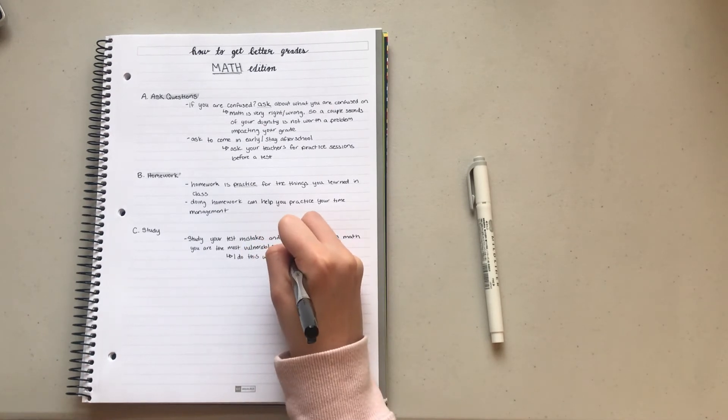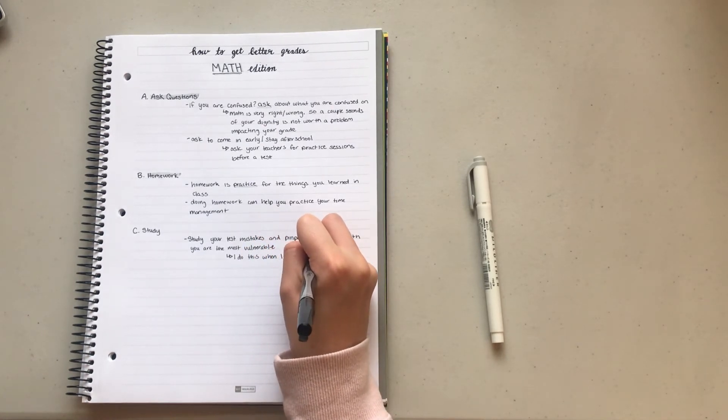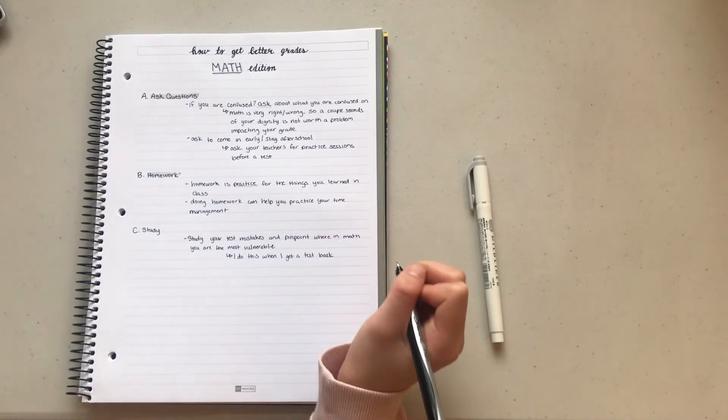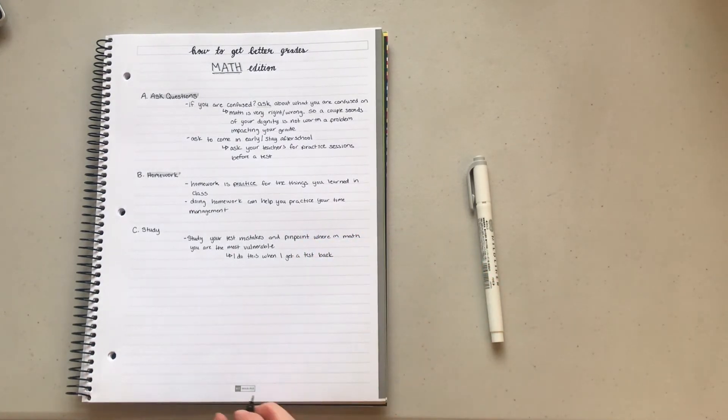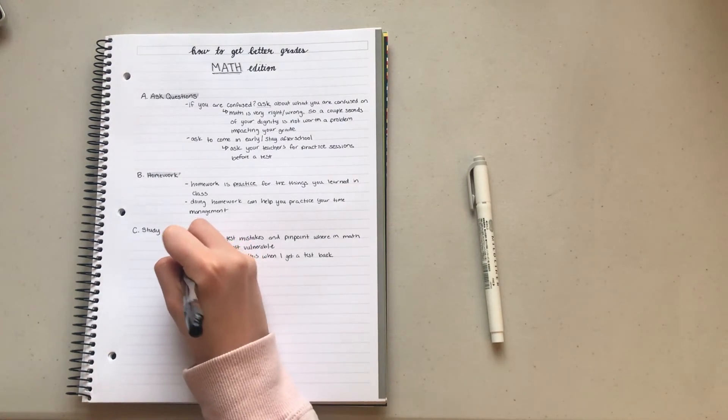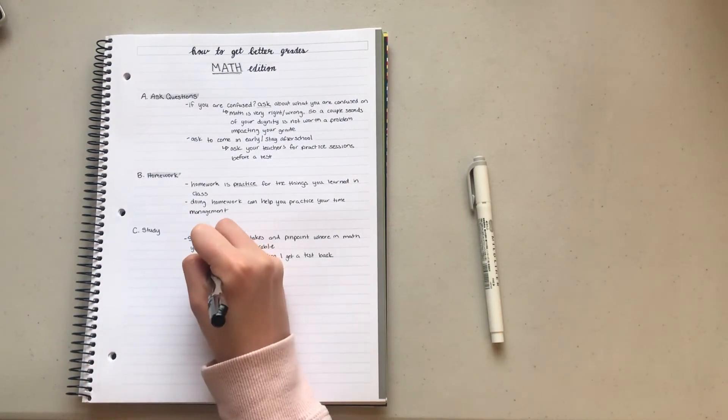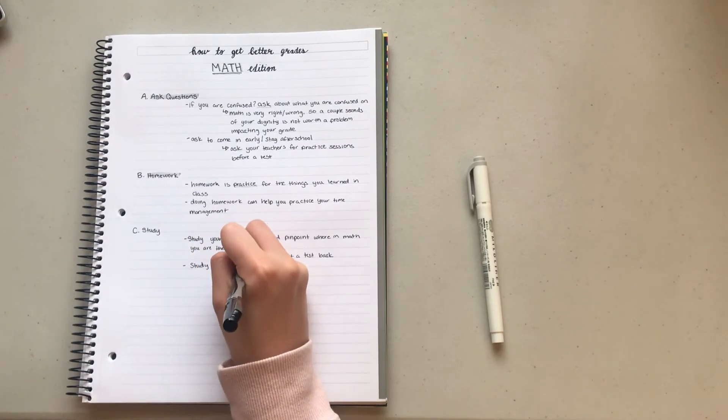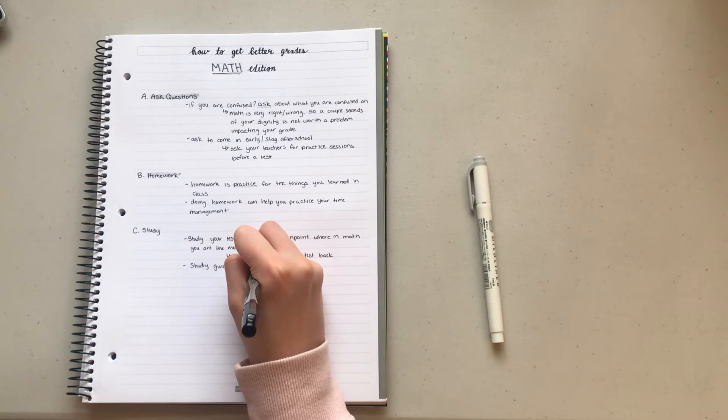If your teacher allows test corrections, then correct them on a piece of paper and turn them in. Looking over your mistakes will significantly improve your score by preventing you from making those mistakes.